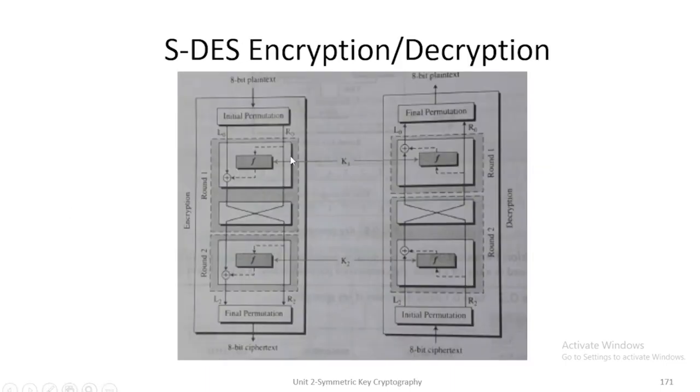This is the overview diagram of S-DES. This is the initial permutation, L0, R0. Once again, I am writing the answer for this one.